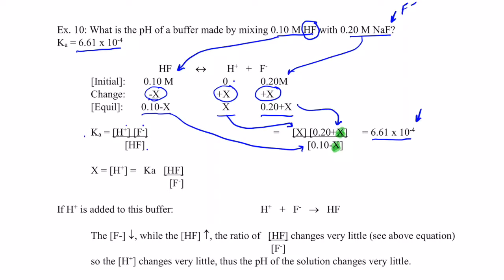So what I really end up with is that my H plus, which is right here, is my X, will equal the Ka times the HF concentration all over the F negative concentration. Let's make sure you see where I got that from.